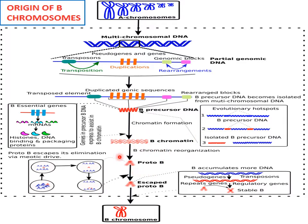This leads to the formation of proto-B. The proto-B does not follow the Mendelian inheritance pattern; it escapes elimination by having its own mechanism of being inherited — by means of meiotic drive. These escaped proto-Bs accumulate more and more DNA, as they are no longer under the influence of the general cell cycle mechanism, and they exist in the form of B chromosomes.